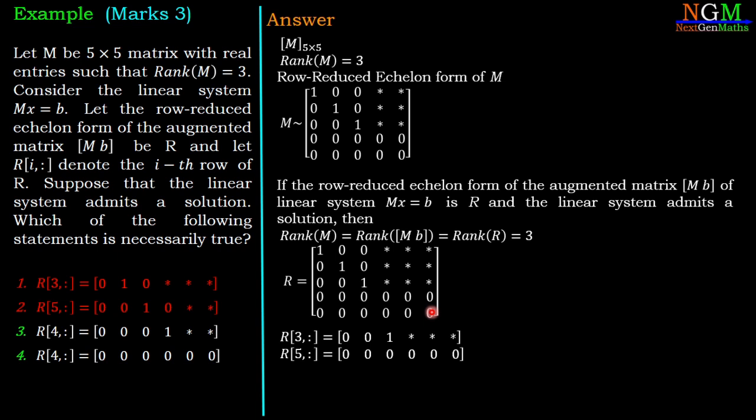Now we have the third option, which is about the fourth row. The fourth row is a zero row, but the third option shows a non-zero row. Therefore, the third option is wrong. The fourth option shows that the fourth row is zero. Therefore, the fourth option is the correct answer.